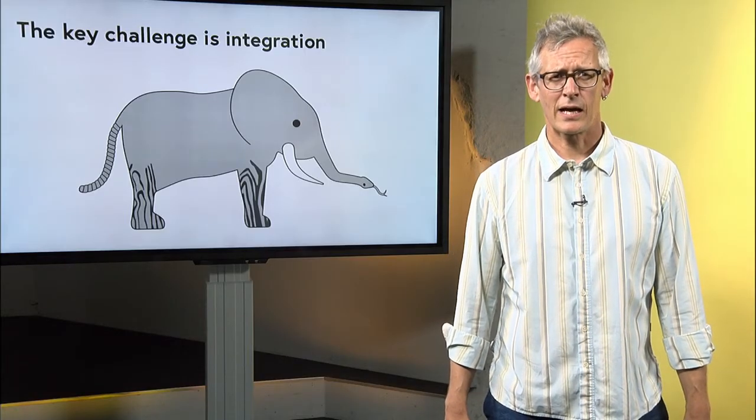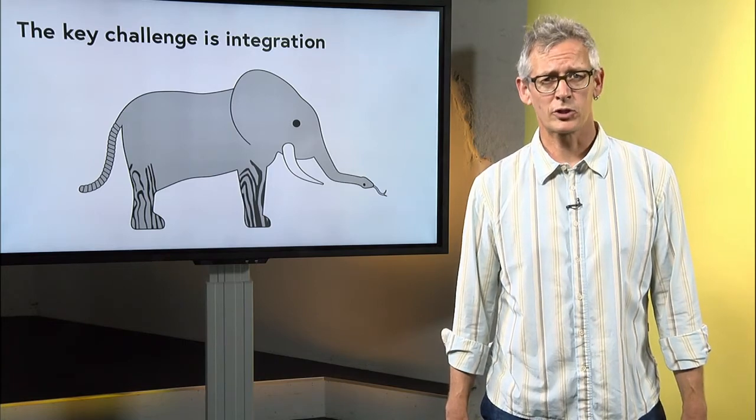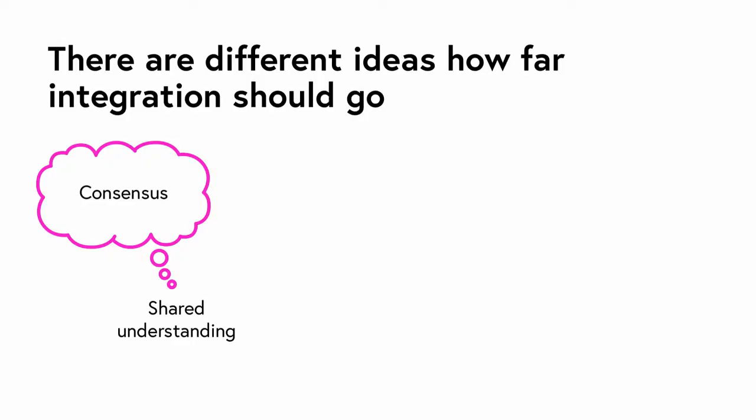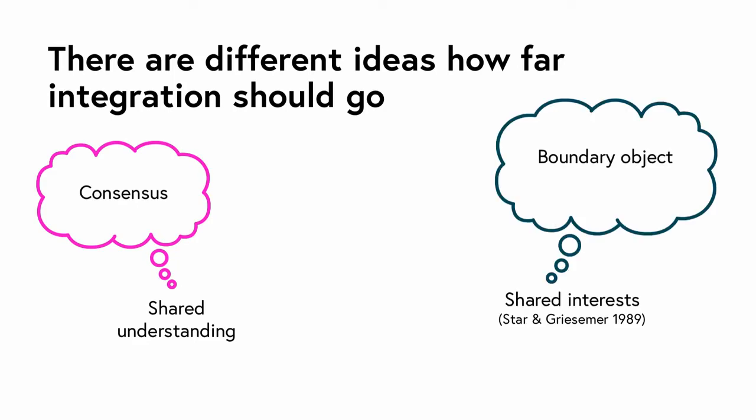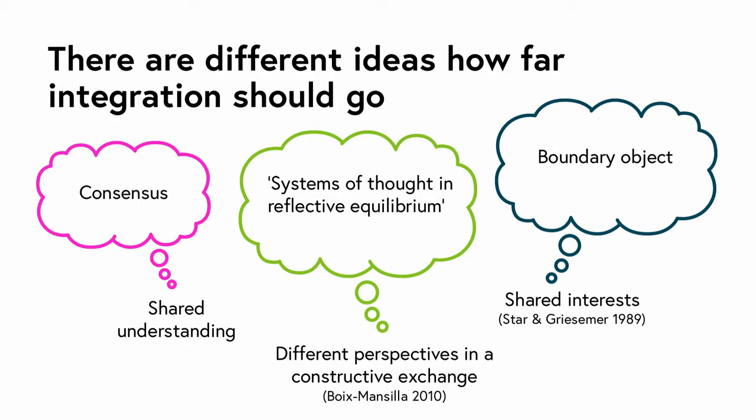A tricky question is how far integration should go and what form it should have. One form is a consensus, where all participants would have the same understanding of an issue and how to deal with it. Another form is a boundary object, where integration means mainly to find an object all participants are interested in — for instance, a technological device, a risk map, or a new policy. No consensus is needed about how things are, but about what should be done.